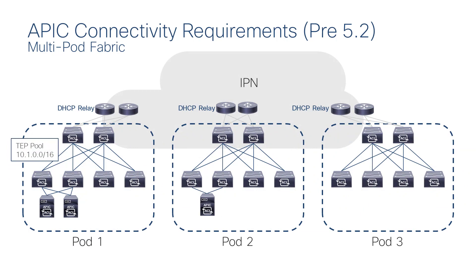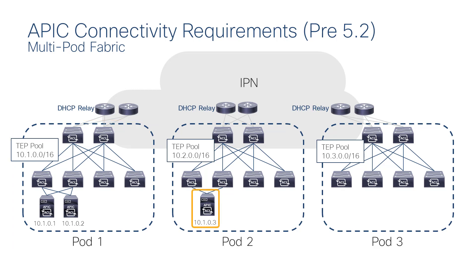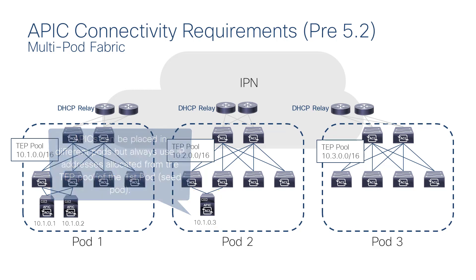Now let's take a look at multipod fabric discovery for directly connected APICs. Again, we have TEP pool 10.1.0.0/16, which is the first TEP pool configured during the APIC cluster setup. Pods 2 and 3 will use different TEP pools. The TEP pool 10.1.0.0/16 is associated with pod 1, which is considered the seed pod in a multipod fabric. Notice that APIC 3 is now located in pod 2. APICs will always maintain their IP addresses from the first TEP pool.